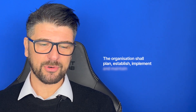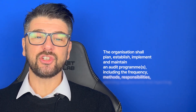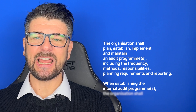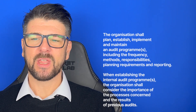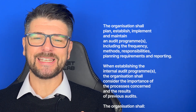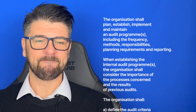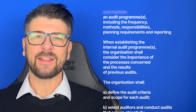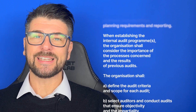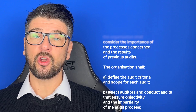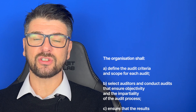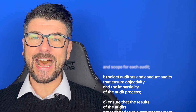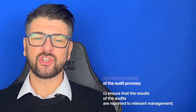The second clause, ISO 27001 Clause 9.2.2 Internal Audit Programme, states: the organisation shall plan, establish, implement and maintain an audit programme including the frequency, the methods, responsibilities, planning requirements and reporting. When establishing the internal audit programme, the organisation shall consider the importance of the processes concerned and the results of previous audits. The organisation shall: A, define the audit criteria and scope of each audit; B, select auditors and conduct audits that ensure objectivity and the impartiality of the audit process; and C, ensure that the results of the audits are reported to relevant management.